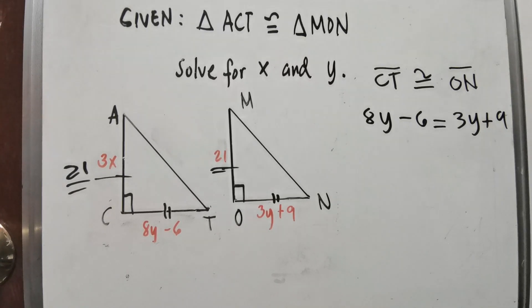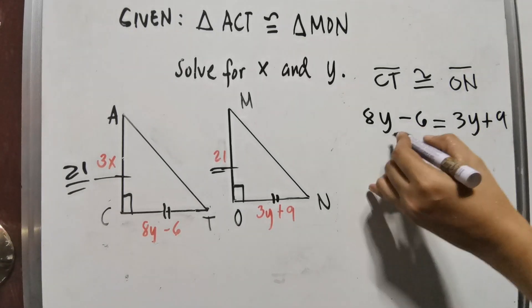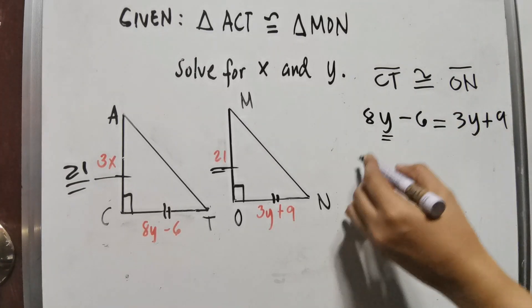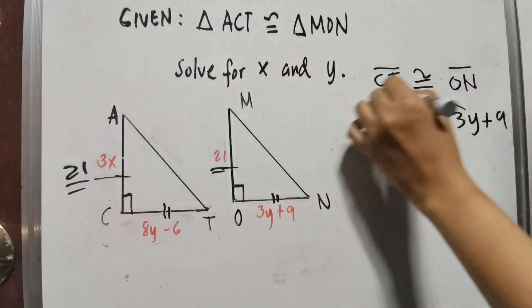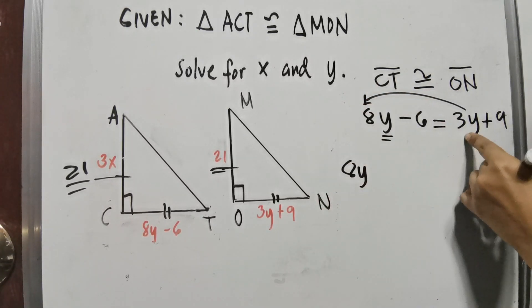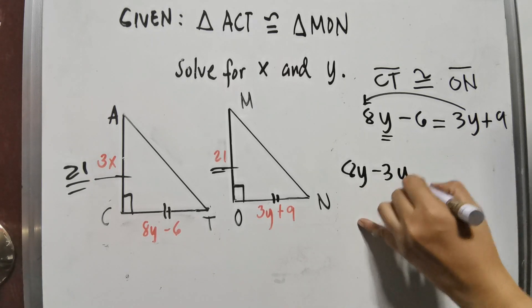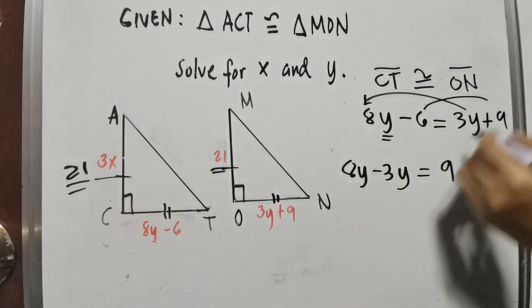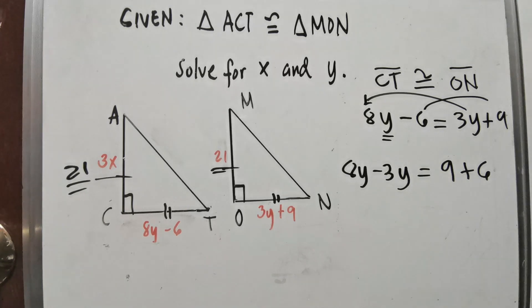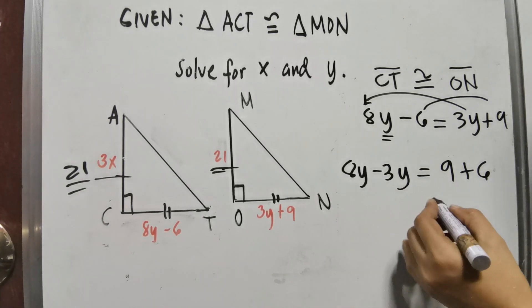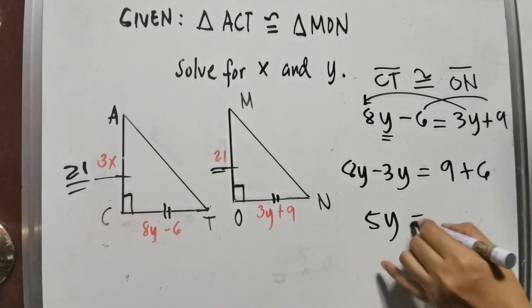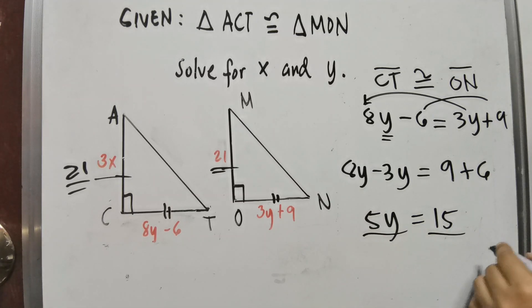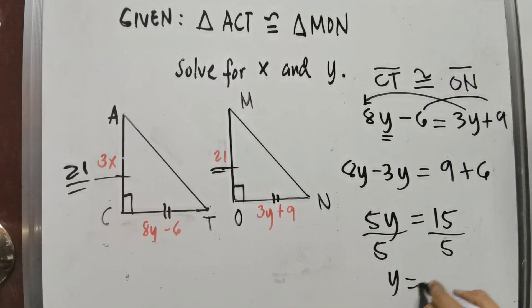To get the measure of the sides, we have to solve for Y. By the addition property of equality, combine like terms. We have 8Y minus 3Y is equal to 9 plus 6. So 5Y equals 15. Divide both sides by 5, and Y equals 3.